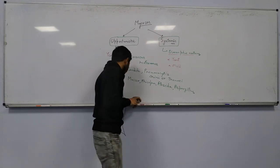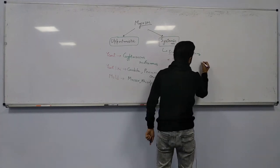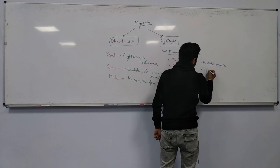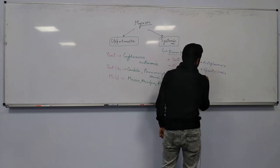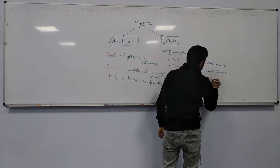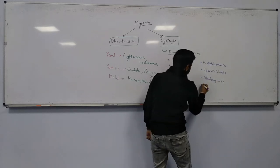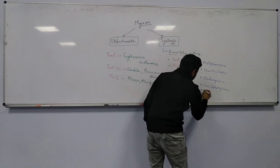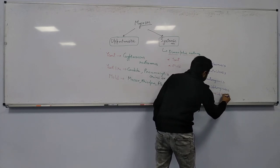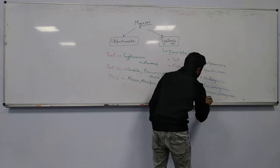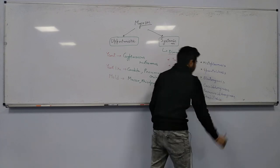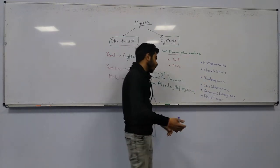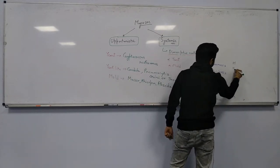For dimorphic fungi in the systemic category, we can talk about histoplasmosis, sporotrichosis, blastomycosis, coccidioidomycosis, paracoccidioidomycosis, and paracellosis. To remember these, think of the HSBC bank: H for histoplasmosis, S for sporotrichosis, B for blastomycosis, C for coccidioidomycosis — just add P for paracoccidioidomycosis and paracellosis.